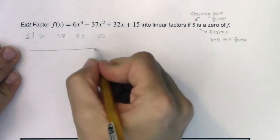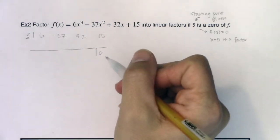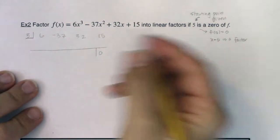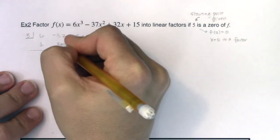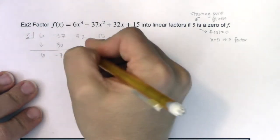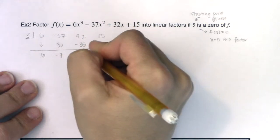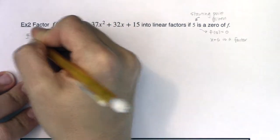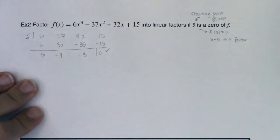Now if 5 is a zero, this better turn out to be 0. If it's not, I made a typo or the problem was written incorrectly. So let's see. The 6 comes down. 5 times 6 is 30. Negative 37 plus 30 is negative 7. 5 times negative 7 is negative 35. 32 minus 35 is negative 3. 5 times negative 3 is 15. And these do subtract out to 0. So that's looking good.